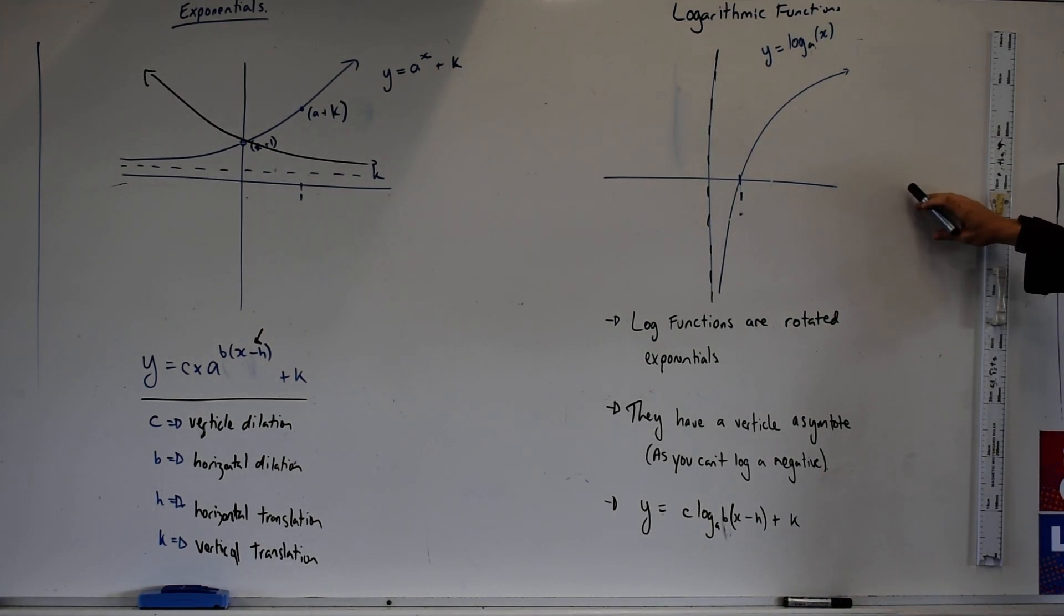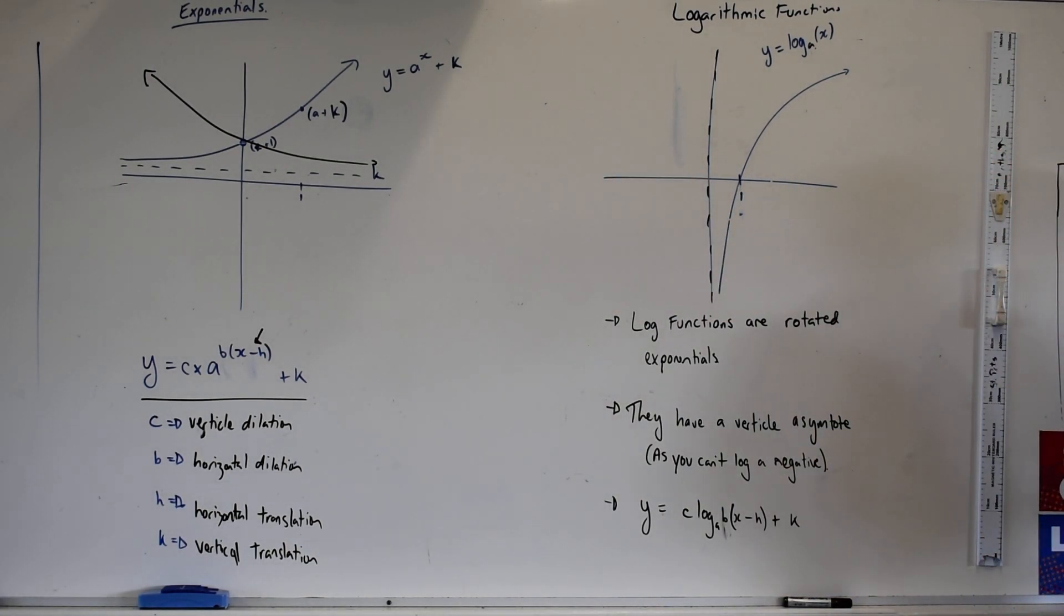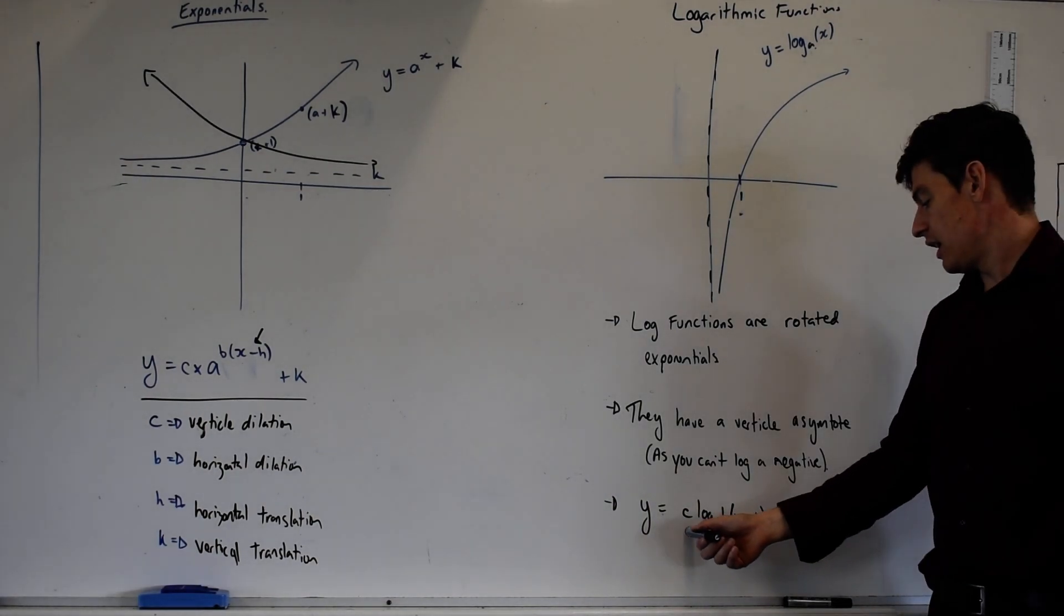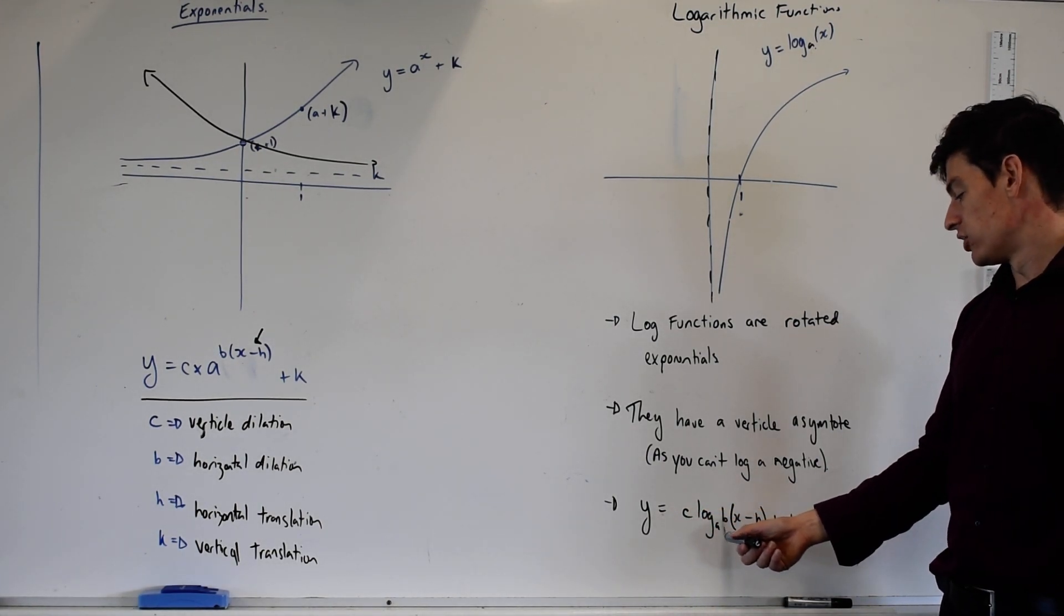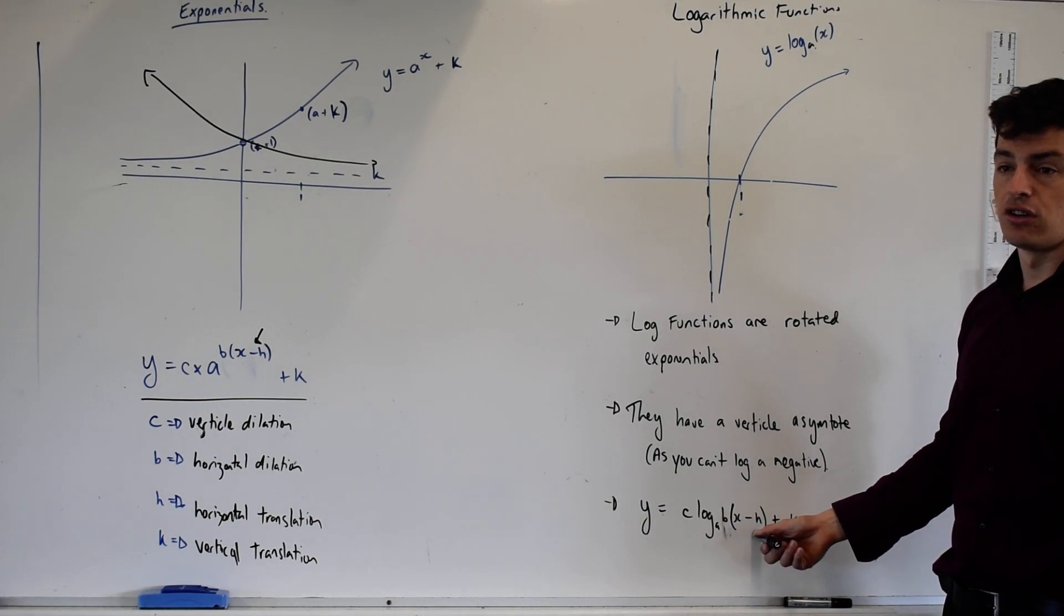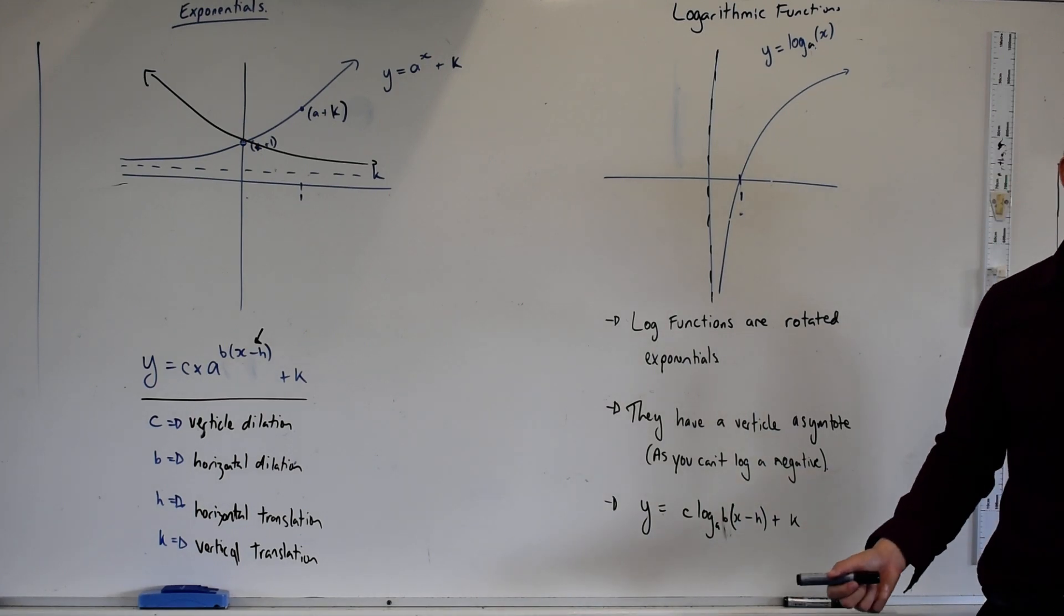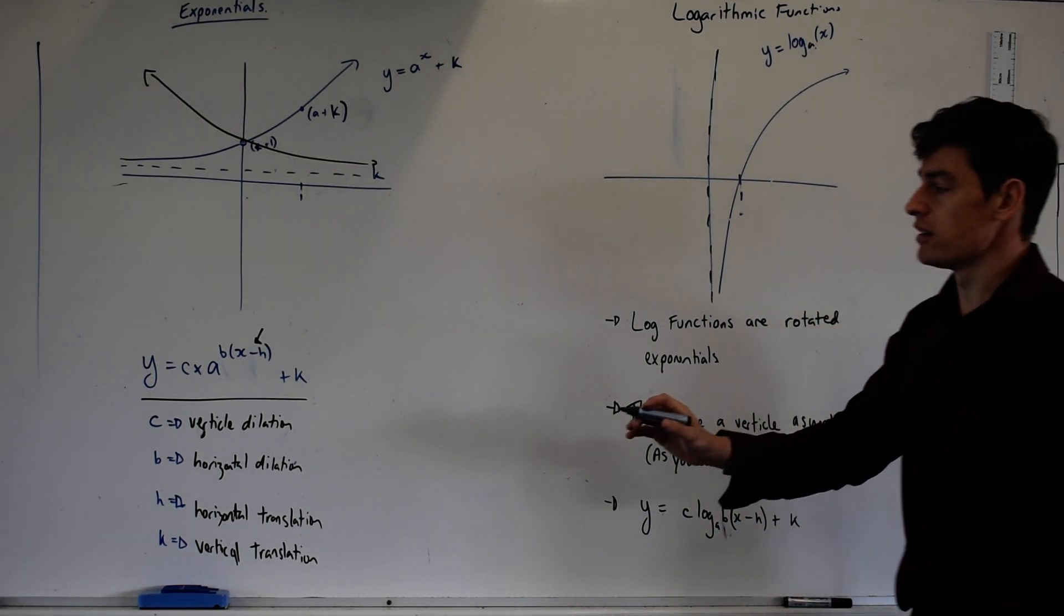And that's our general shape for a log. That doesn't mean log functions won't look any different, they can definitely go over the axis, but to do that, what do I need to apply? I need to apply transformations or translations. So again, here, our c value does what? Vertical dilation. Our b value? Horizontal dilation. Our h value? Horizontal translation, so we're just moving it. And our k value? Vertical translation.